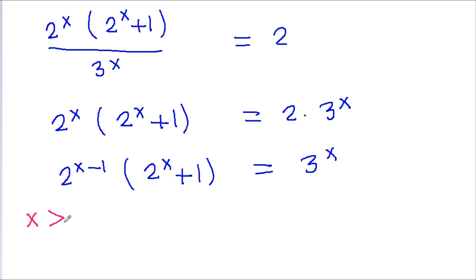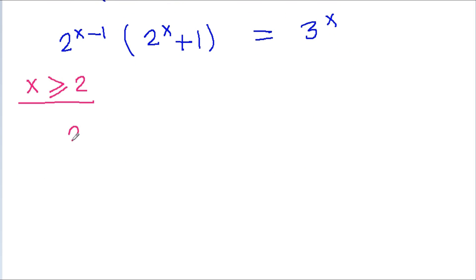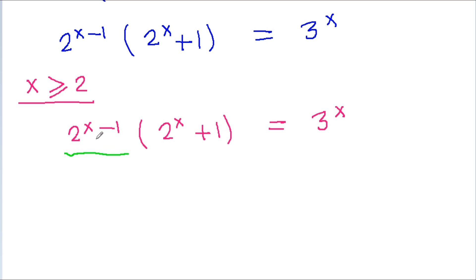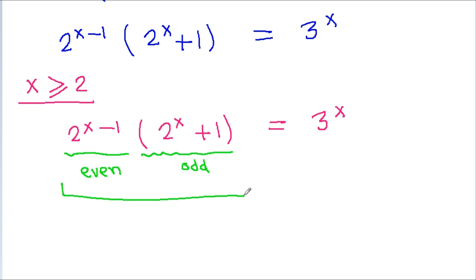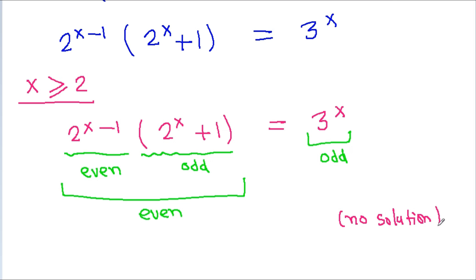For x ≥ 2: we have 2^(x-1) · (2^x - 1) = 3^x. Here 2^(x-1) is even and (2^x - 1) is odd, so even times odd is even. But 3^x is odd. Since even cannot equal odd, there is no solution for x ≥ 2.